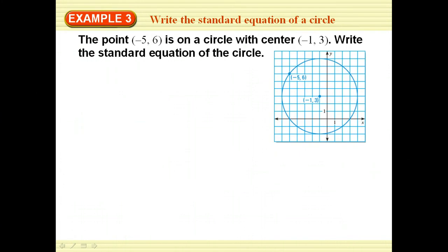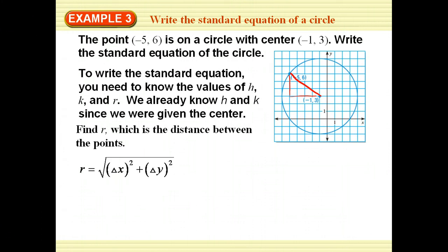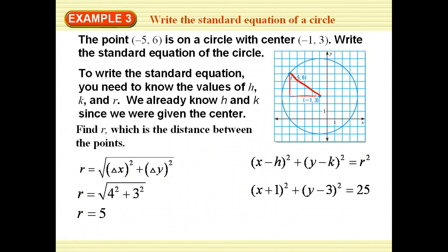The point (−5, 6) is on a circle that has a center of (−1, 3). Write the standard equation of the circle. To do that, I have my center at (−1, 3), but I need the radius — the distance between these two points. Using the Pythagorean theorem: the change in x is 4, the change in y is 3, so we end up with a radius of 5. We then plug into the formula: x plus 1, quantity squared, plus y minus 3, quantity squared, equals 5 squared, or 25.